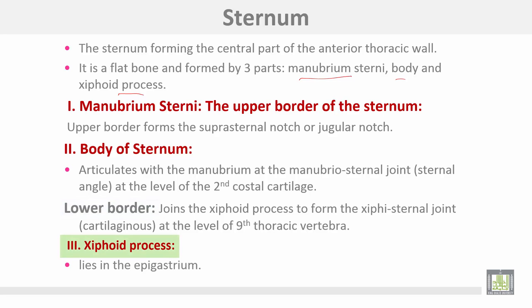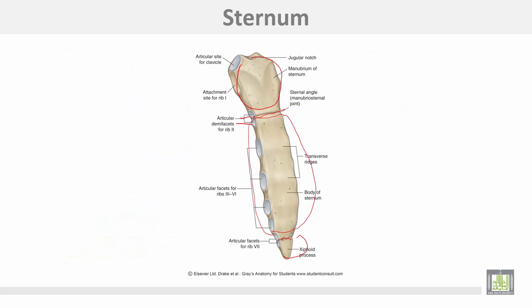The lower border of the body joins the xiphoid process to form the xiphisternal joint, which is cartilaginous at the level of the ninth thoracic vertebra. The xiphoid process lies in the epigastrium. The sternal angle is opposite the second costal cartilage.